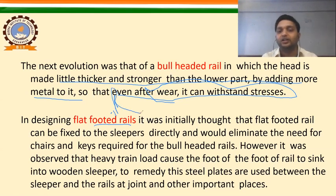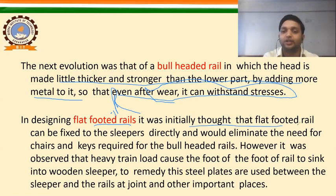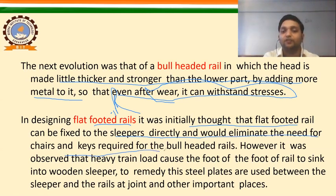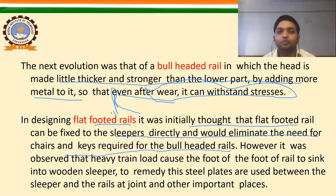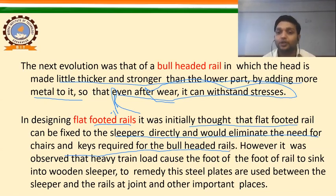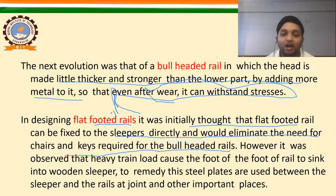The flat footed rail was initially thought to be fixed to sleepers directly, eliminating the need for chairs and keys required for the bull headed rail. However, it was observed that heavy train loads caused the foot of the rail to sink into wooden sleepers. To remedy this, steel plates are used between the sleeper and the rail at joints and other important places.